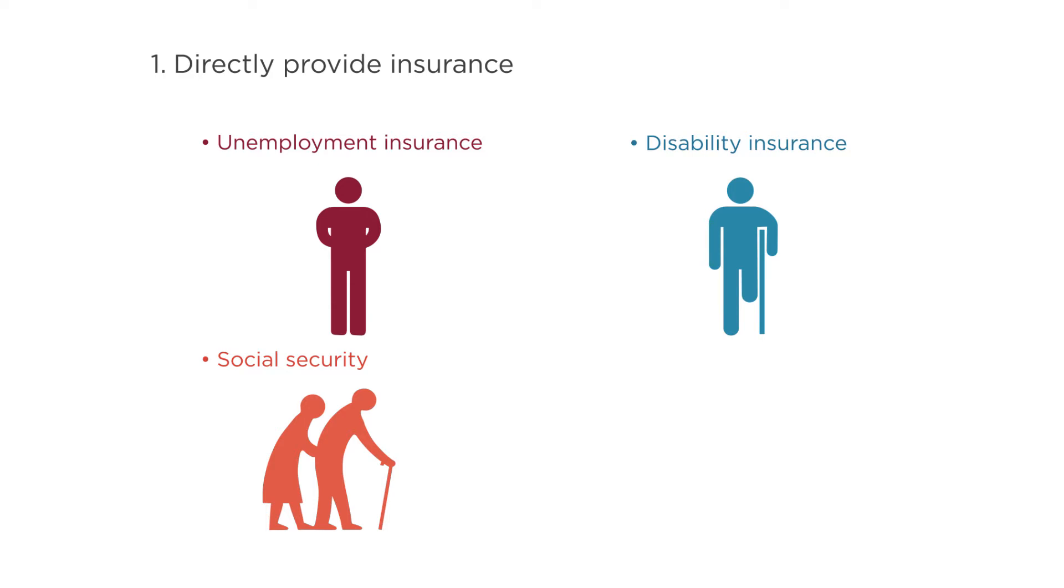And the larger social insurance programs are for health care. There's Medicare, which is a government-provided health insurance program for everyone over age 65 in the US. And there's Medicaid, which is government-provided health insurance for those who live below or near the poverty line.